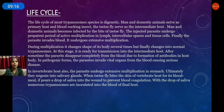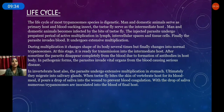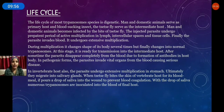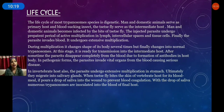The infected parasite undergoes a prepotent period of active multiplication in lymph, intracellular spaces, and tissue when it enters the human being. This multiplication is an asexual process — binary fission. Finally, the parasite invades the blood and undergoes extensive multiplication.